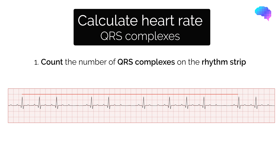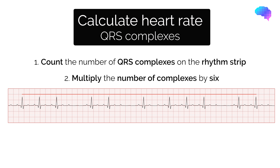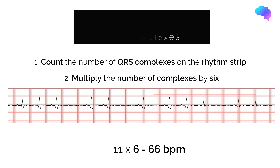Count the number of QRS complexes on the rhythm strip. After you've done this, multiply the number of QRS complexes by 6, giving you the number of QRS complexes within 1 minute. In this example, we can see we have 11 QRS complexes, therefore when we multiply this by 6 we get a heart rate of 66 beats per minute.